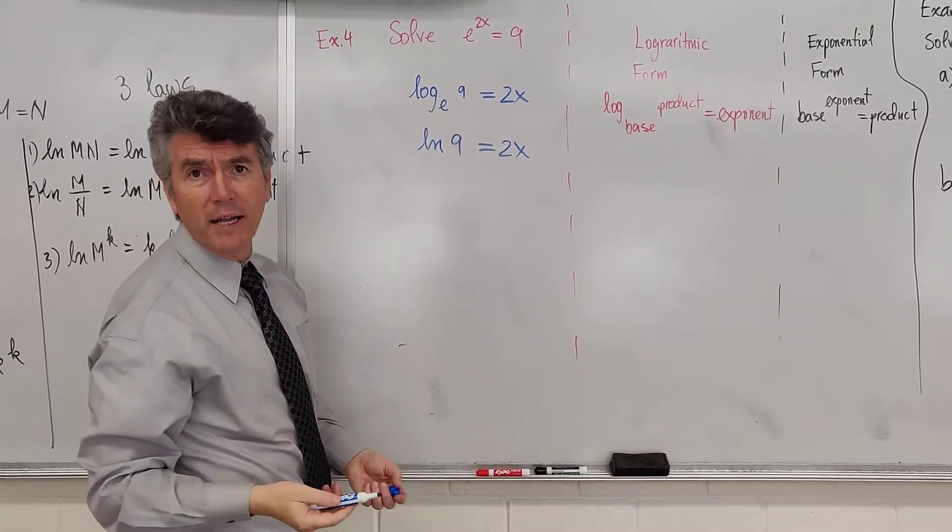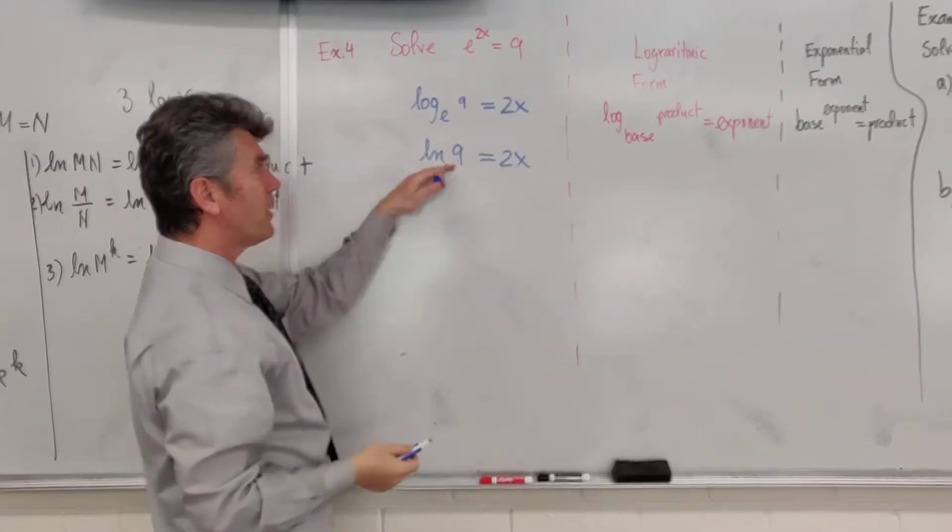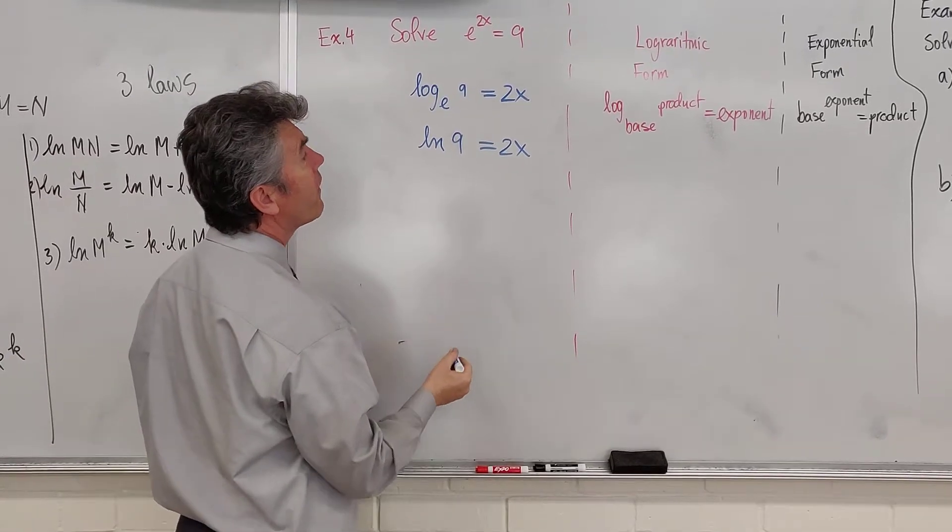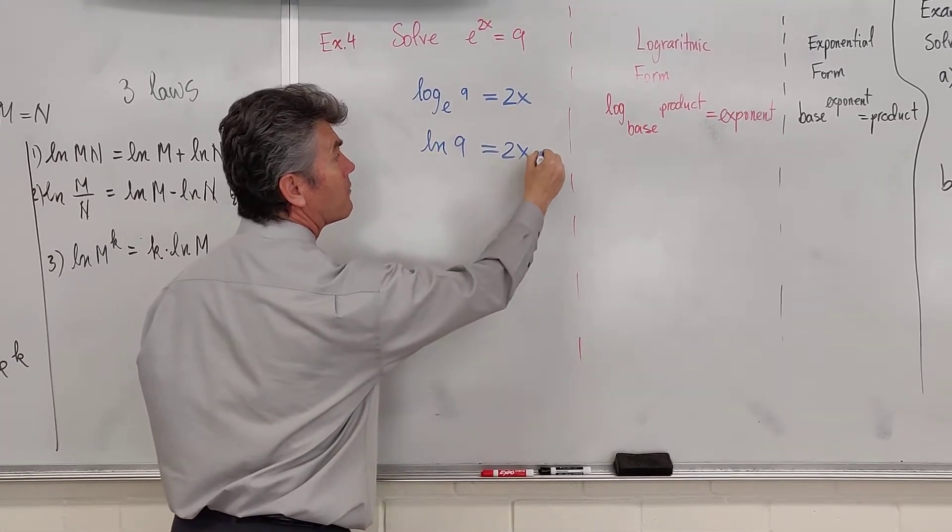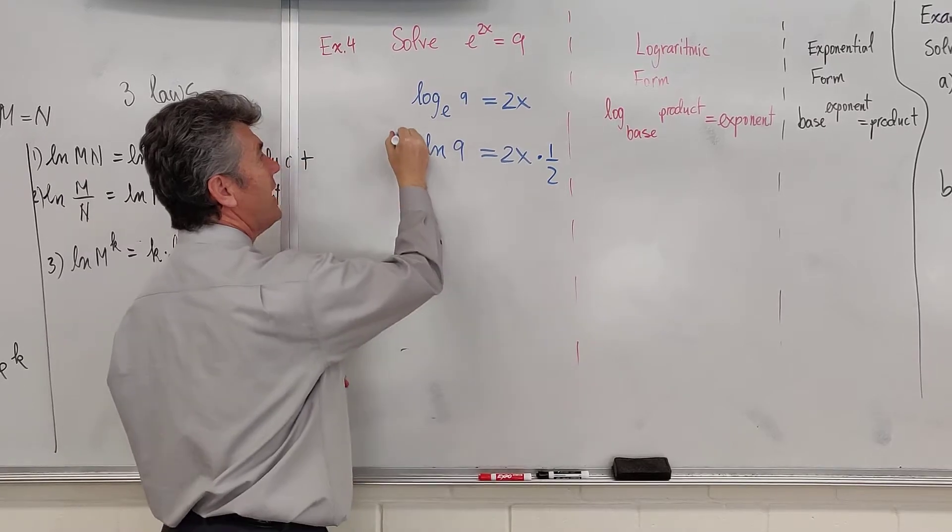Right now, I could take my calculator and approximate natural log of 9. But I'm going to have a little bit of fun. I'm going to multiply both sides by a half.